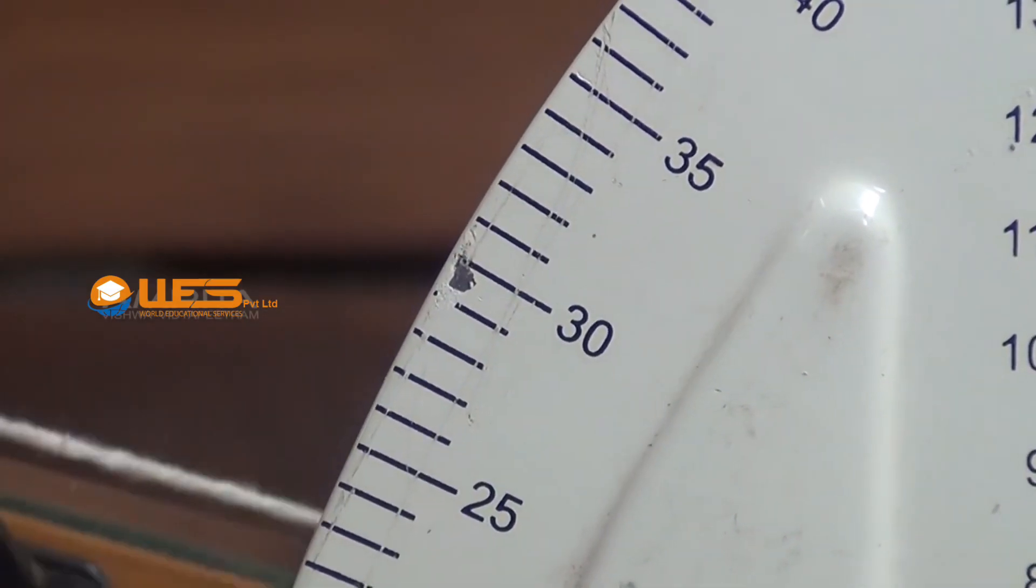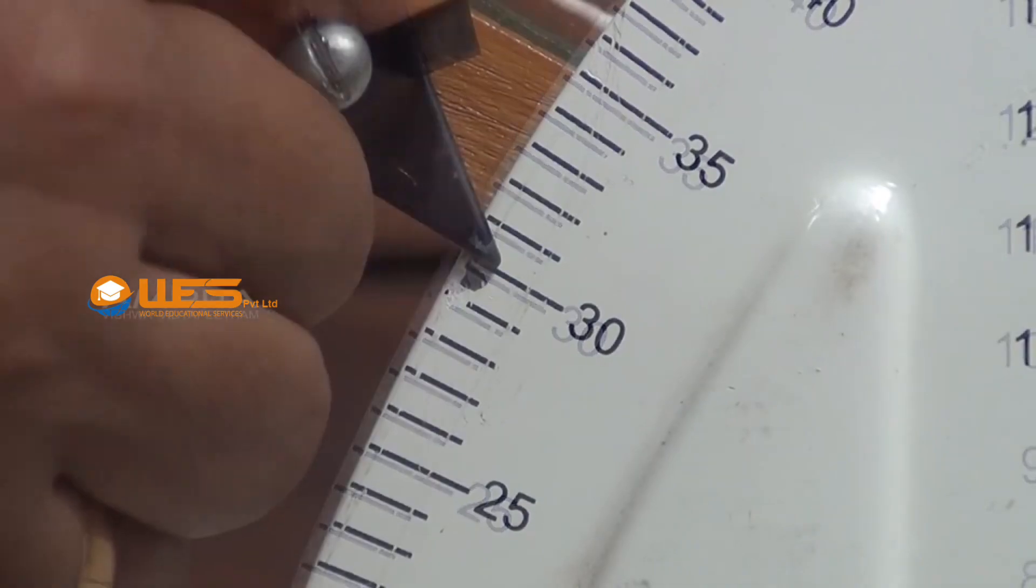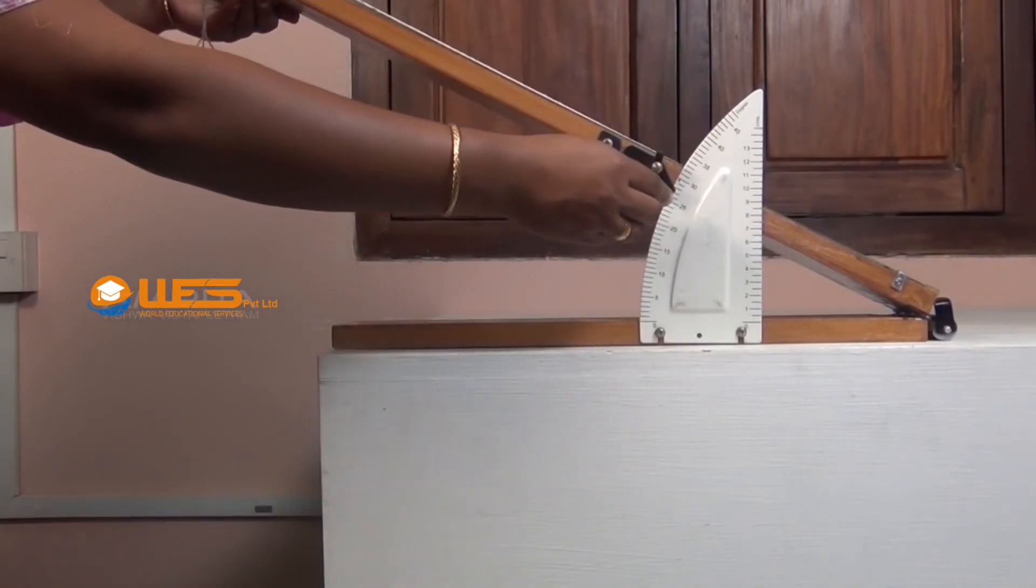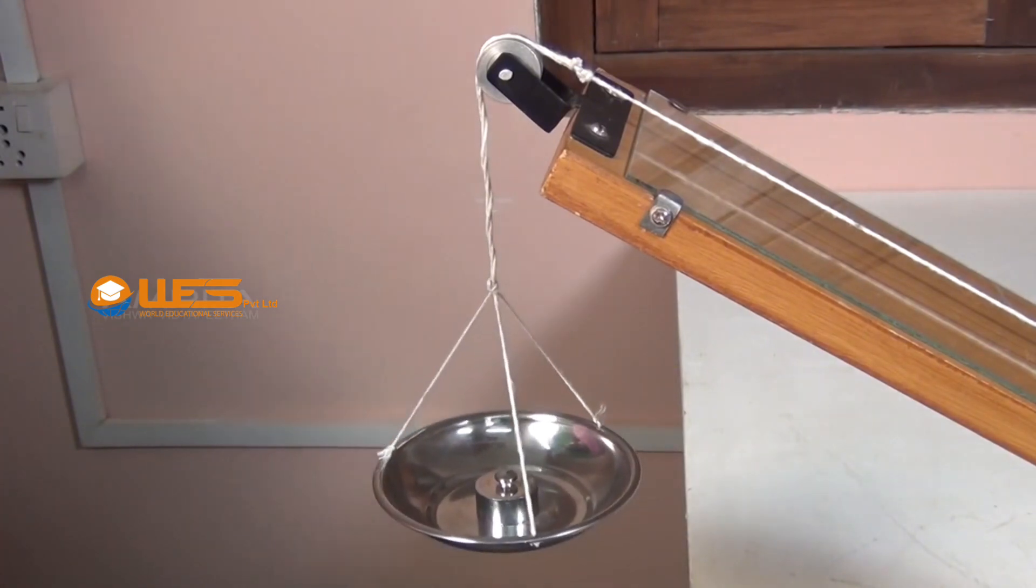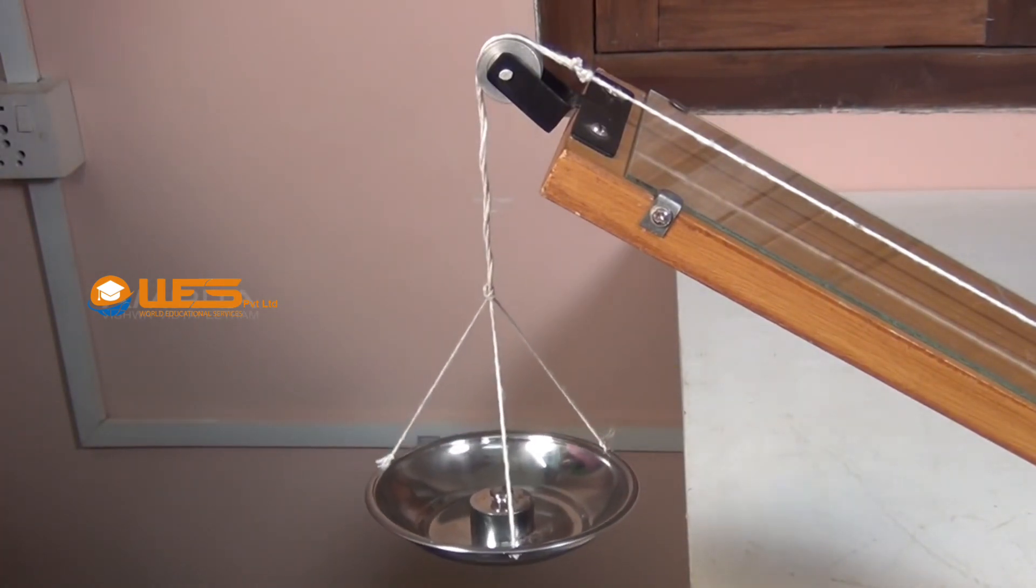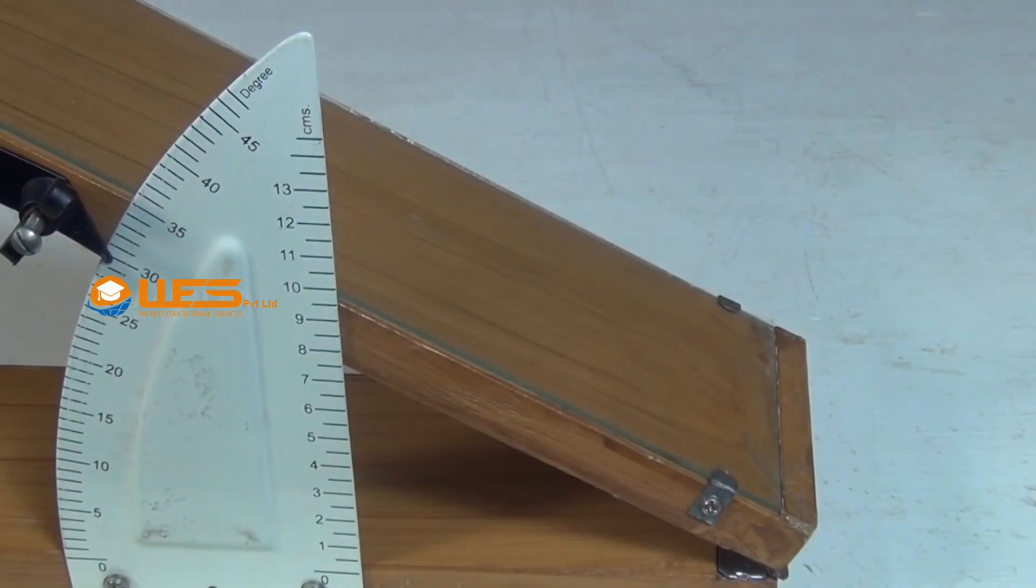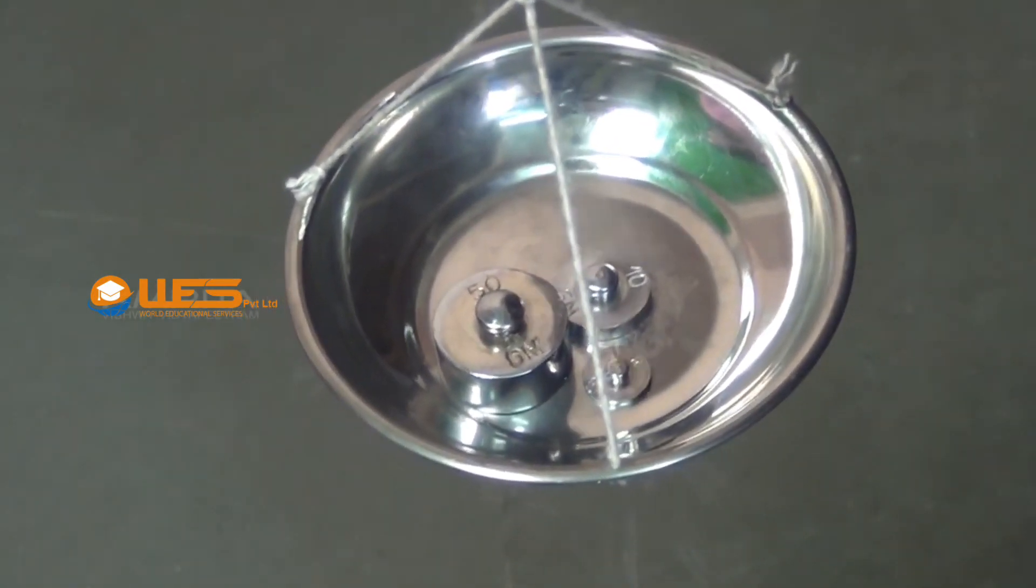Tie the free end of the thread to the pan. Raise the inclined plane and fix it at an angle of 30 degrees. The roller may start rolling down with acceleration. Add weights on the pan and increase them till the roller just starts moving upward with uniform velocity only on tapping. Note the mass added in the pan.